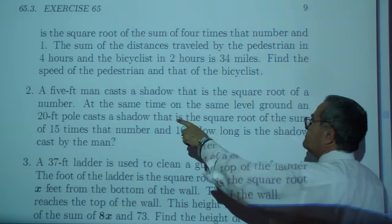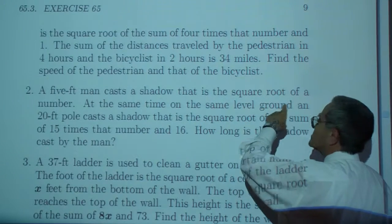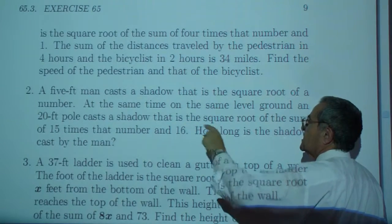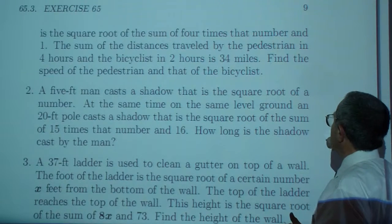Two, a five-foot man casts a shadow that is the square root of a number. At the same time, on the same level ground,